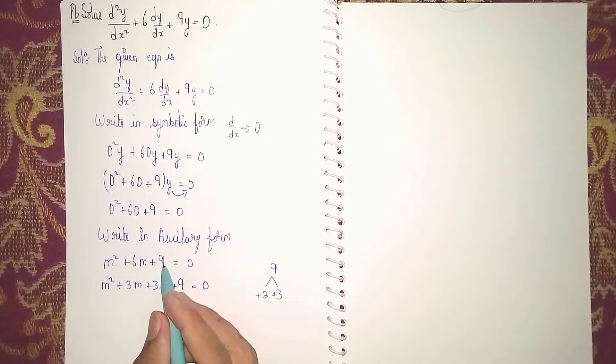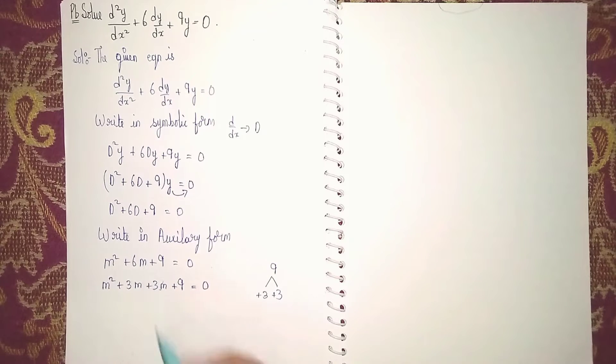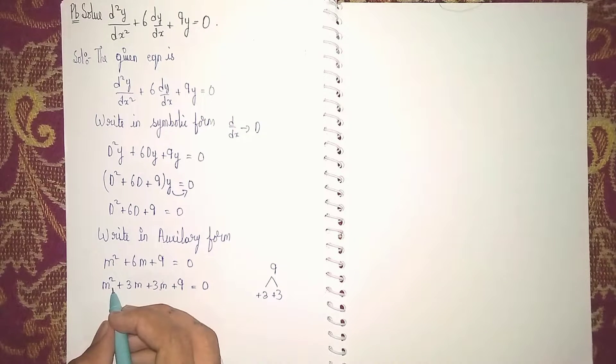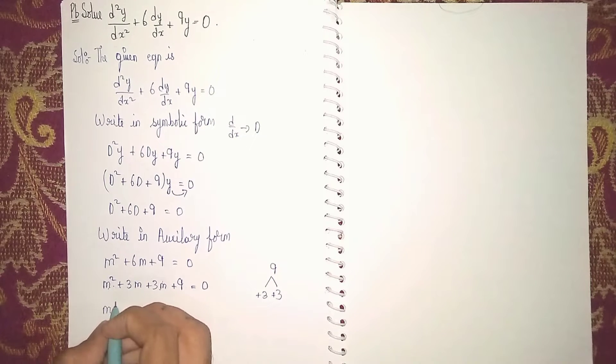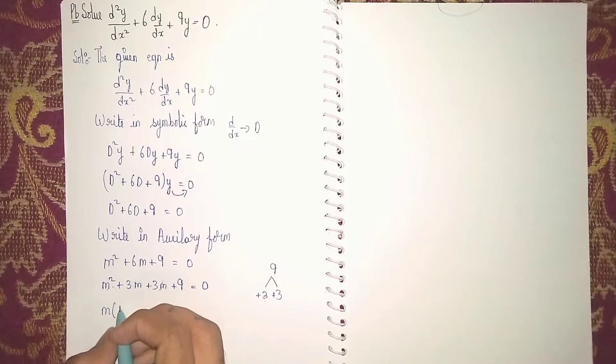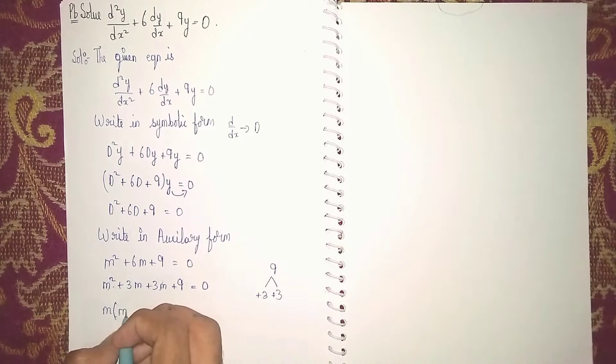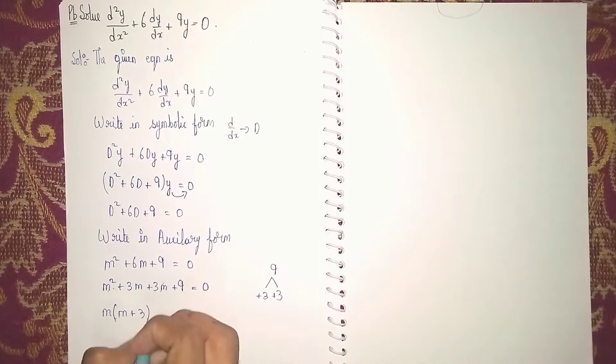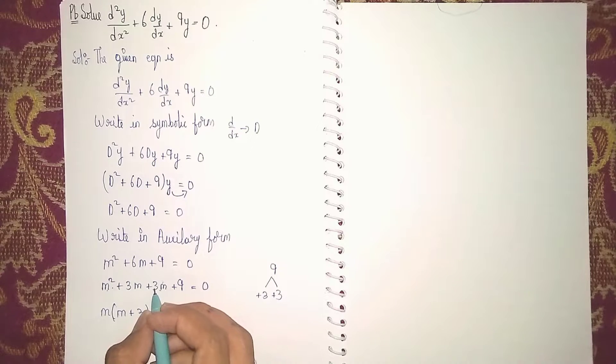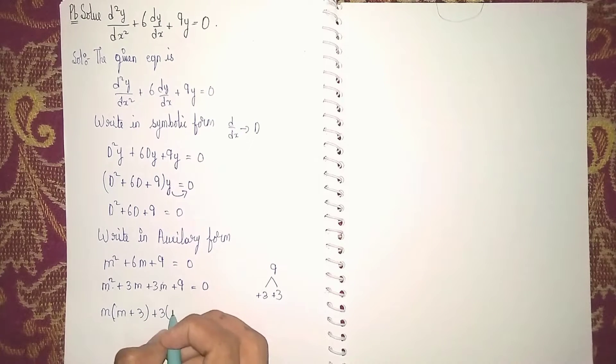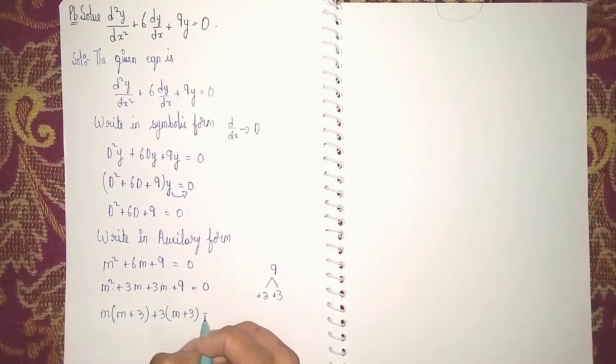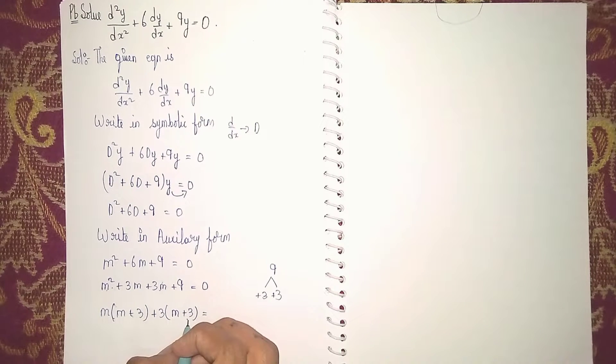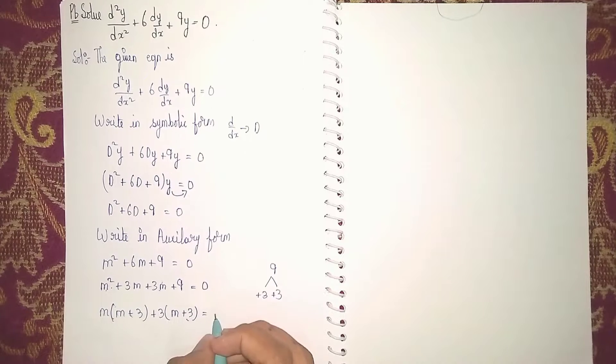3 times 3 is 9, then 3 plus 3 is 6m. Now here you can take m as common: m(m + 3). Then you can take +3 common: +3(m + 3). See, both are the same, this means we are doing correct. Equal to 0.